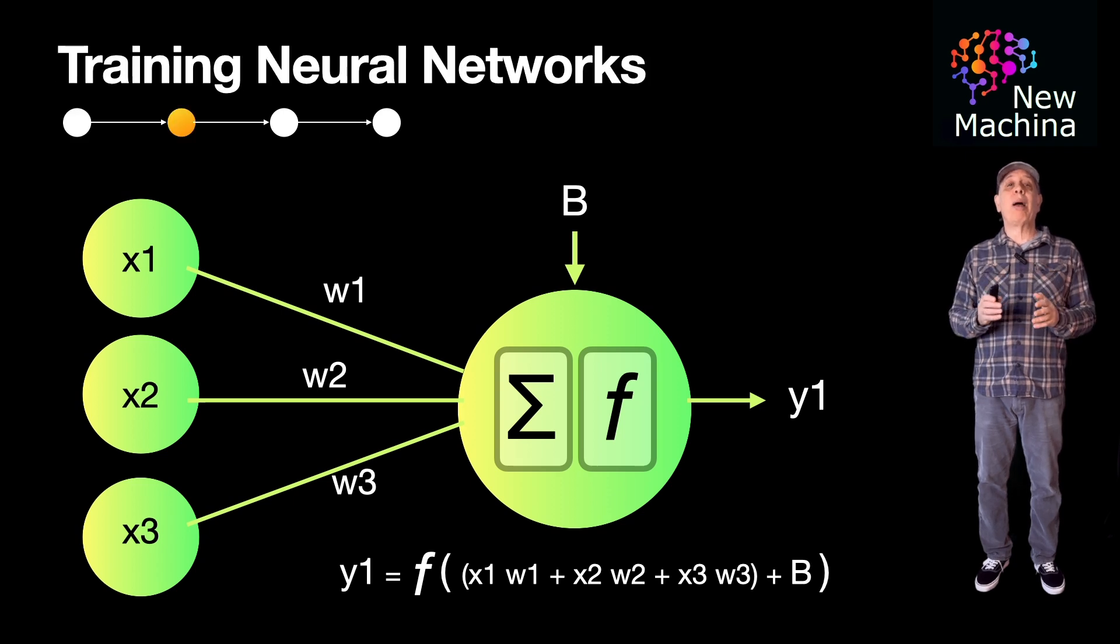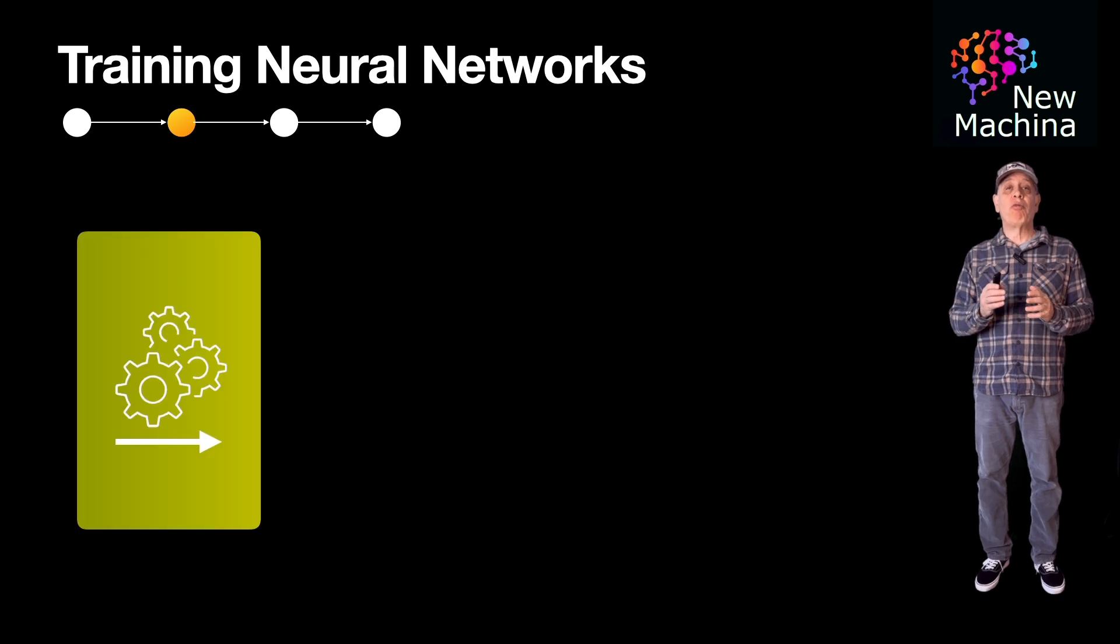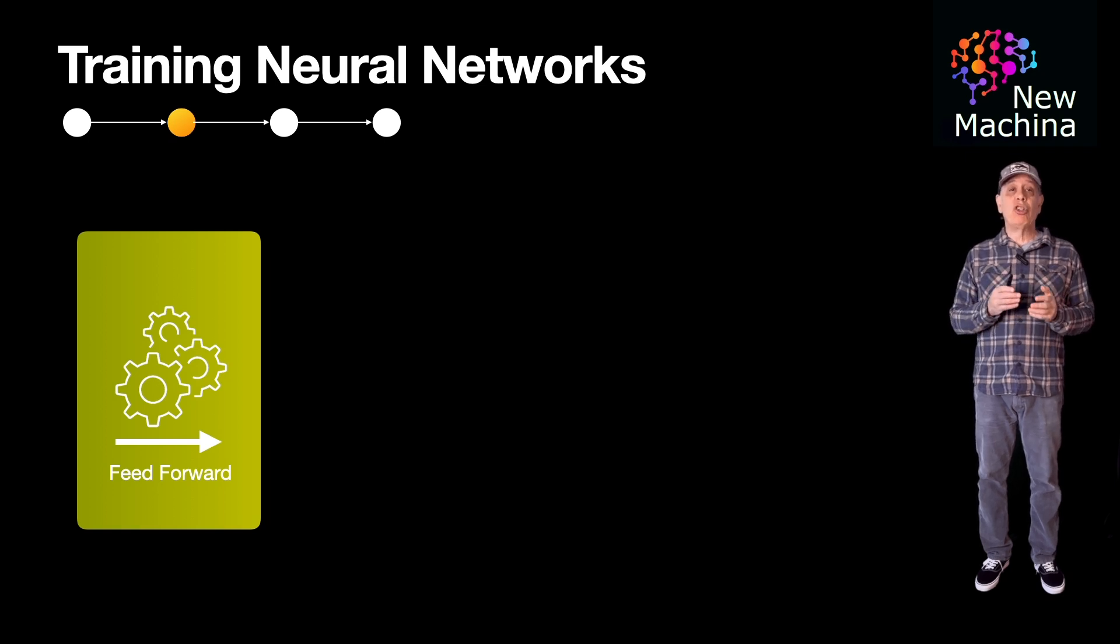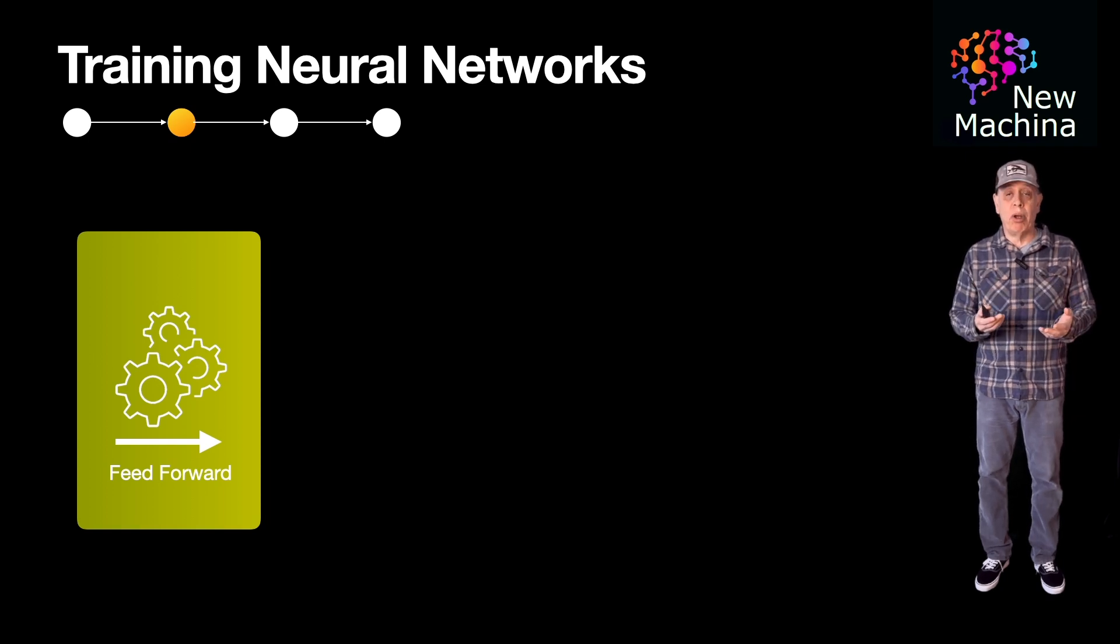So what are the steps in training the neural network? Well, in the first step, we perform forward propagation. Input data is passed through the network layer by layer. Each neuron computes a weighted sum of inputs, adds a bias, applies an activation function, and produces an output. The network generates a prediction for a given input.